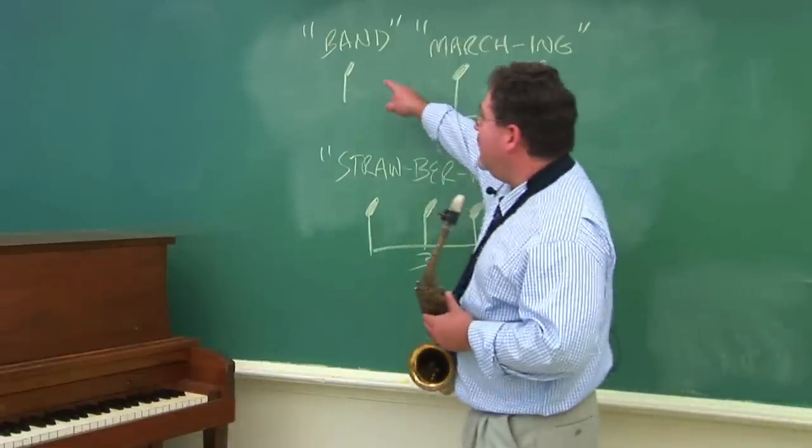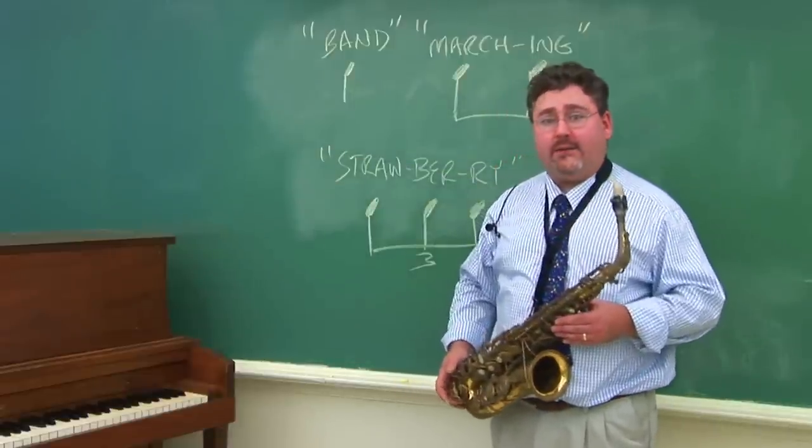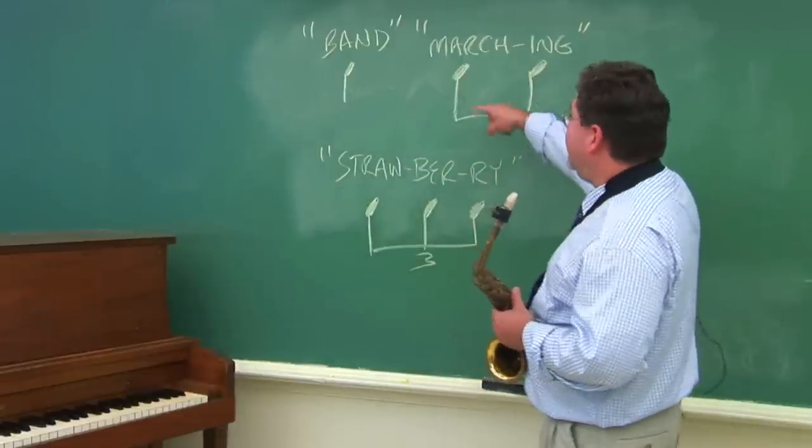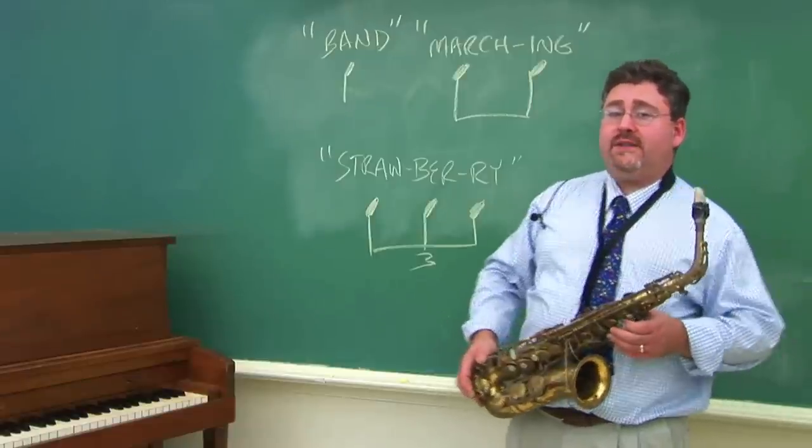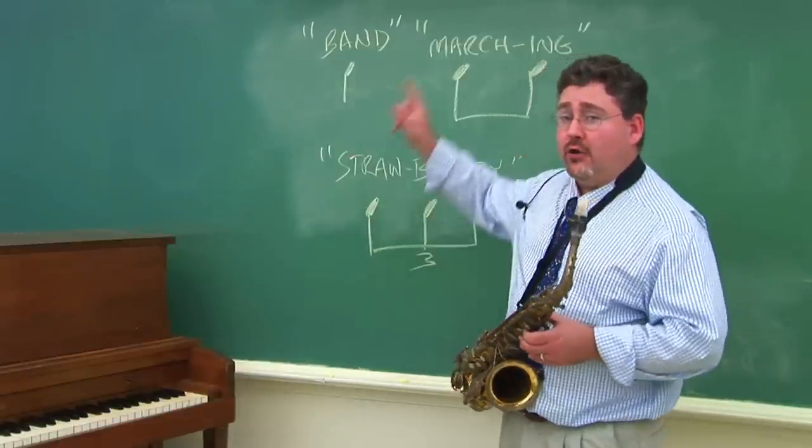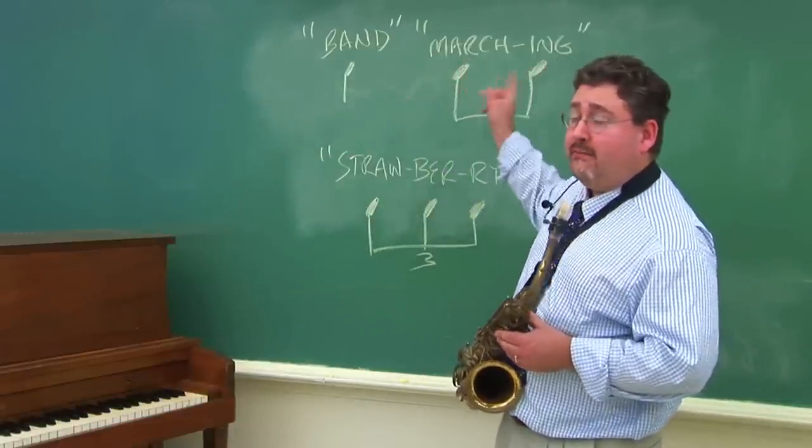Let's take, for example, a quarter note. A quarter note could have the word 'band.' Eighth notes could have the word 'marching.' So if you had two quarter notes, a set of eighths, and a quarter, it could go: band, band, marching, band.